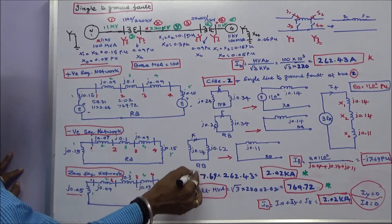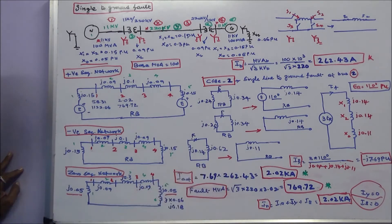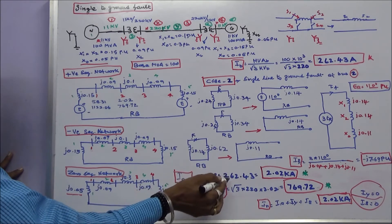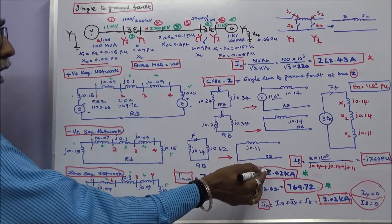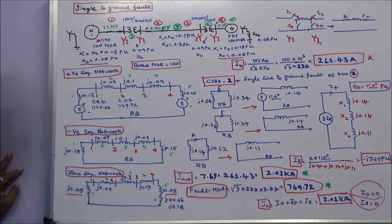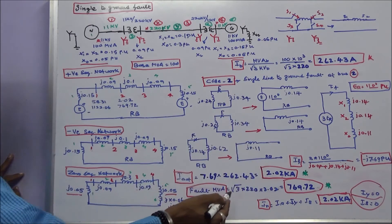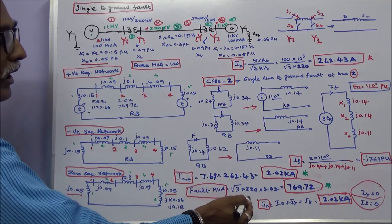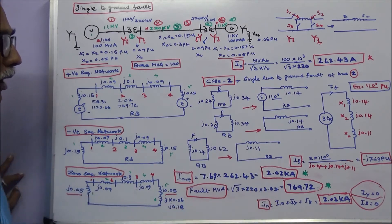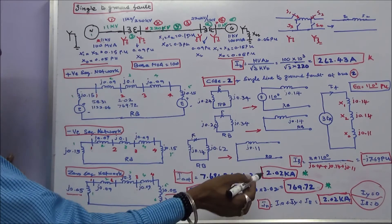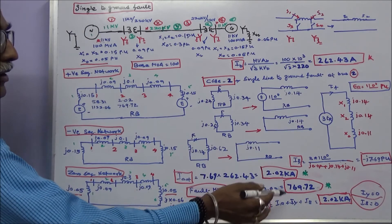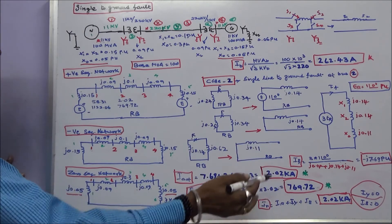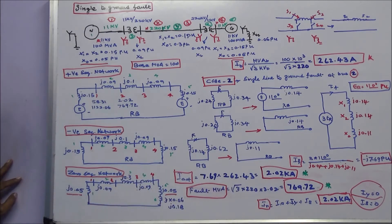Actual fault current is 7.69 times base current 262.43, equaling 2.02 kilo amps. Fault MVA equals root 3 times 220 times 2.02, giving 769.72. Neutral current: IY equals 0, IB equals 0, IR equals 2.02 kilo amps.